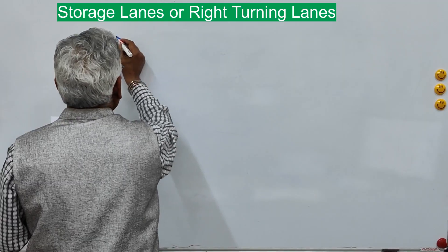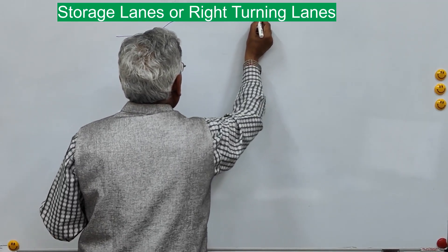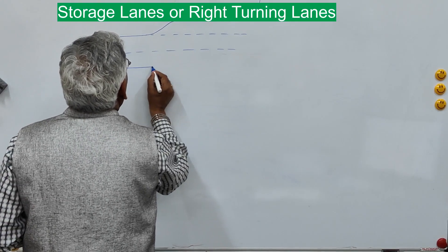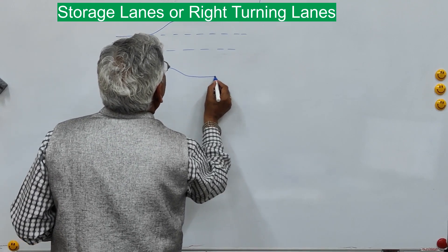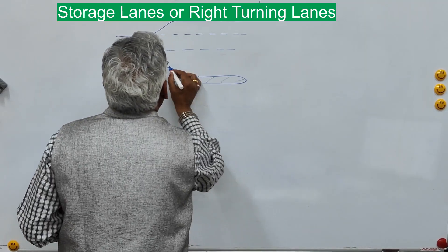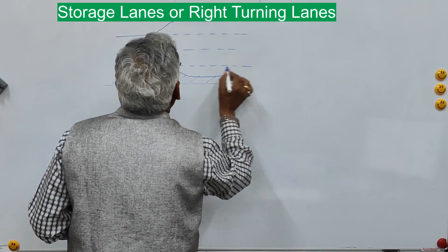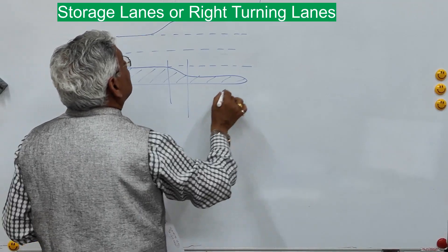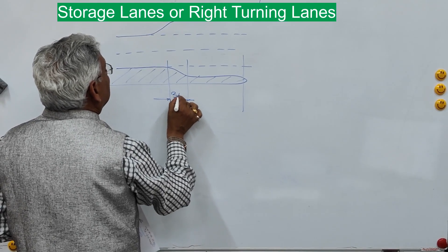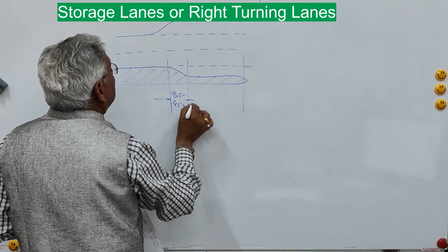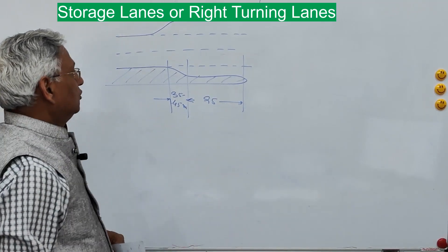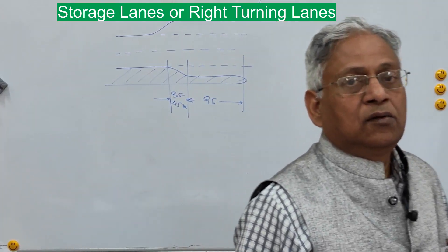This storage lane is provided for left turning vehicles, and here on the median side you provide the right turning lane through the median. The tapered length here is normally 35 to 45 meters, and the storage lane is what you calculated — 95 meters. That is how you provide a storage lane at signal controlled intersections.